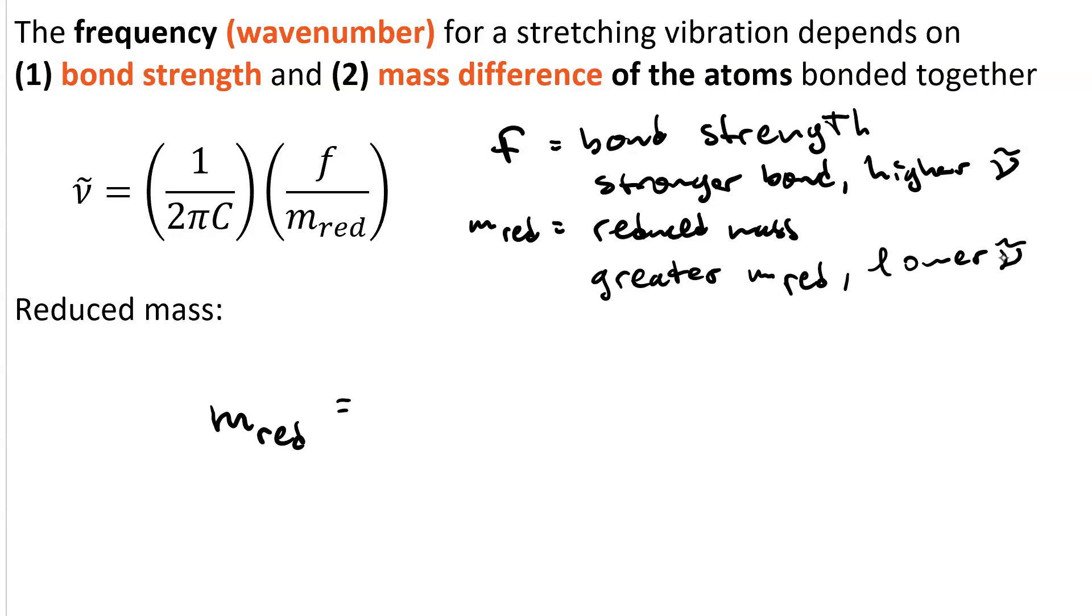M red equals M1 times M2 over M1 plus M2.